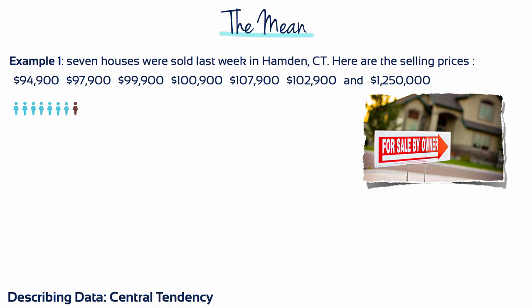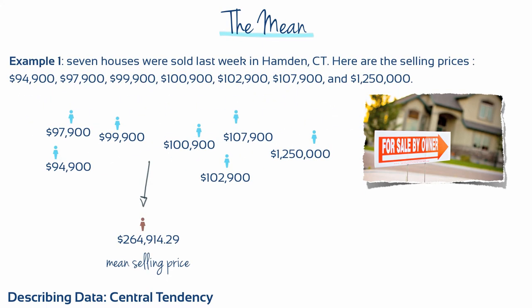In the first example, seven houses were sold last week in Hamden, Connecticut. Here are the selling prices. Adding these seven prices together and dividing by seven gives us the mean selling price of $264,914.29.